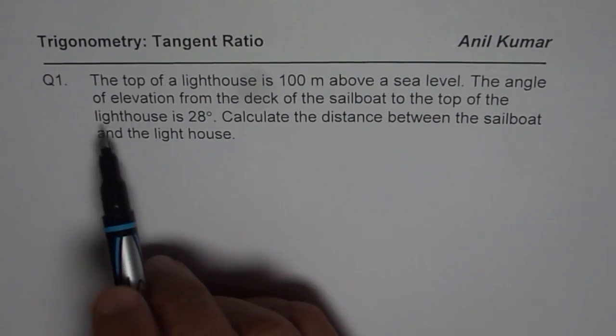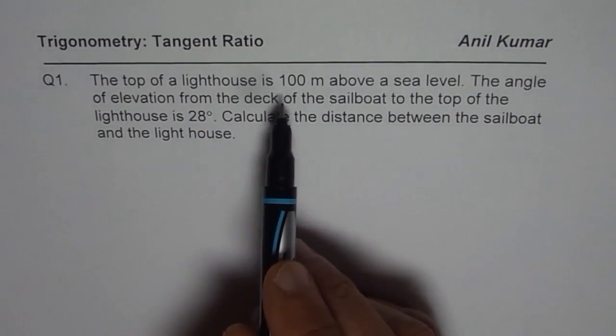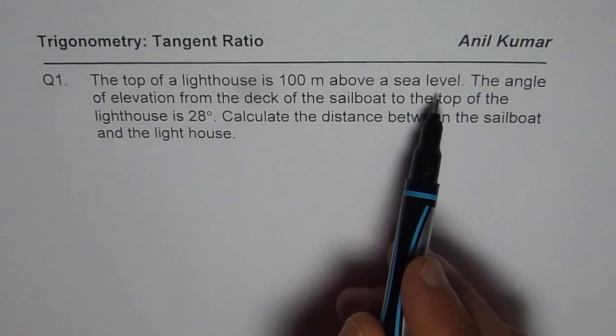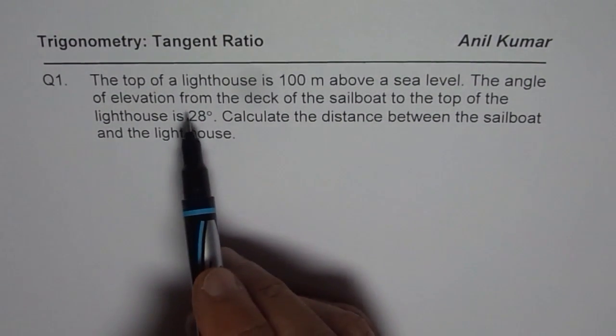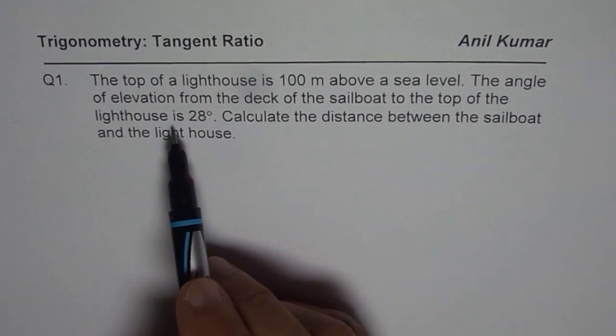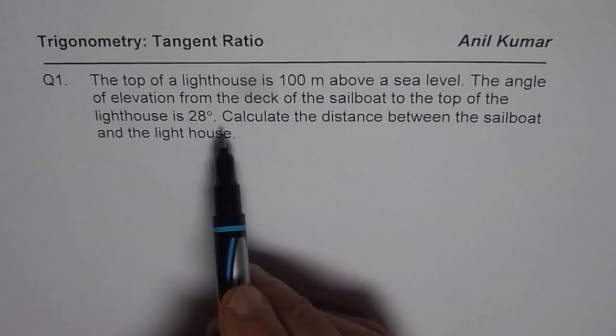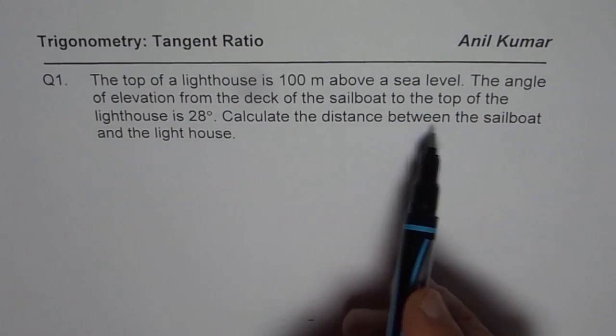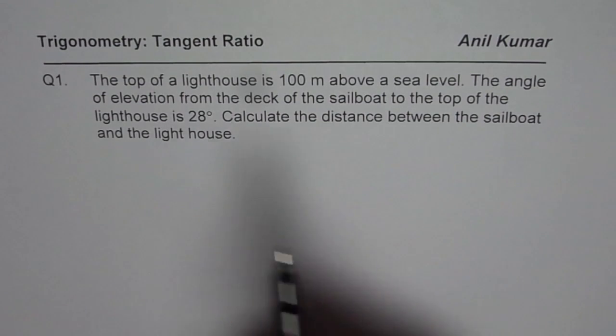The question is: The top of a lighthouse is 100 meters above sea level. The angle of elevation from the deck of a sailboat to the top of the lighthouse is 28 degrees. Calculate the distance between the sailboat and the lighthouse.